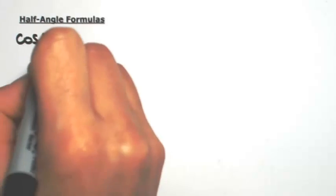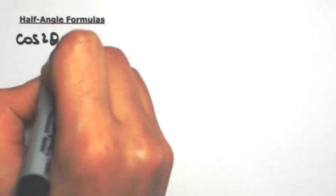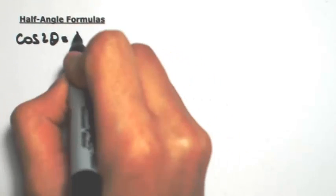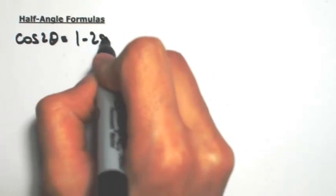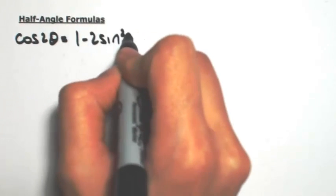Using our double-angle formulas, we're going to find some half-angle formulas. One of our double-angle formulas for cosine is that the cosine of 2 theta is 1 minus 2 sine squared theta.